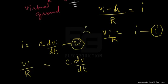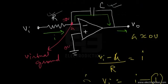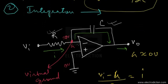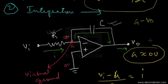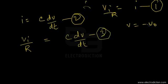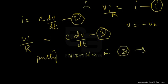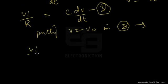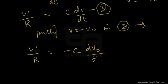Looking at the circuit, the voltage across the capacitor is G − VO. Since G ≈ 0V, the voltage across the capacitor is −VO. Substituting V = −VO into the equation, we get VI/R = −C·dVO/dt. This is equation three.